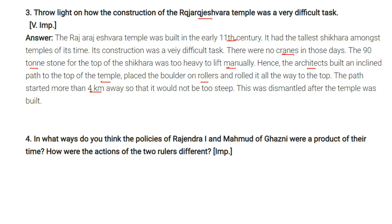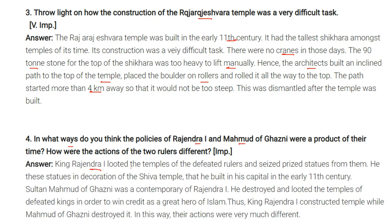Question: In what ways were the policies of Rajendra I and Mahmud of Ghazni a product of their time, and how were their actions different? King Rajendra I looted the temples of defeated rulers and seized prized statues, which he used to decorate the Shiva temple he built in his capital in the early 11th century. Sultan Mahmud of Ghazni, a contemporary of Rajendra I, not only seized valuables from temples but destroyed them, in order to win credit as a great hero of Islam. Thus Rajendra I constructed temples while Mahmud of Ghazni destroyed them — their actions were very different from one another.